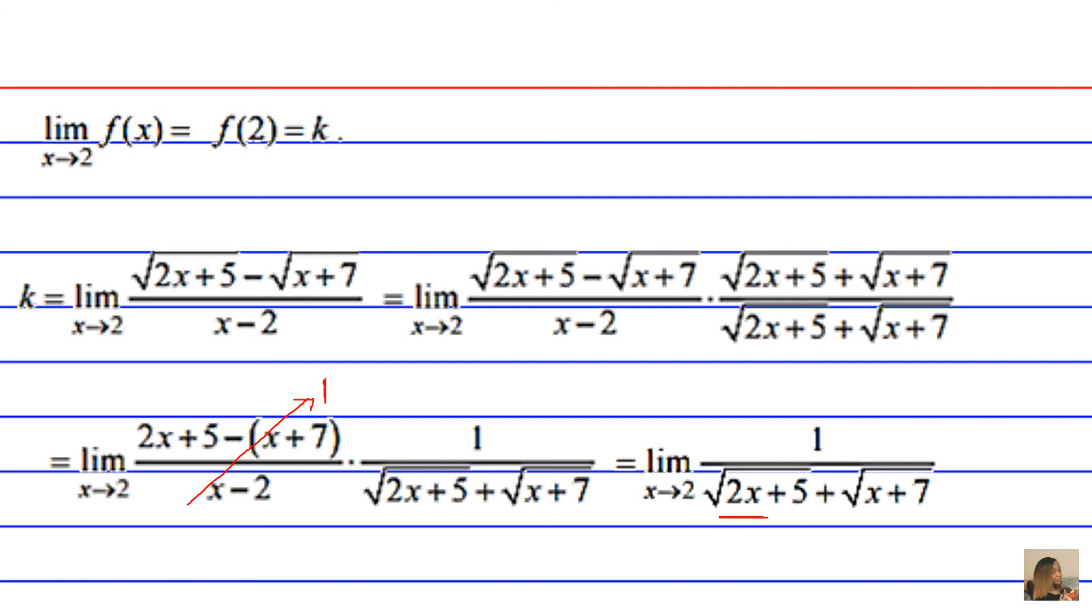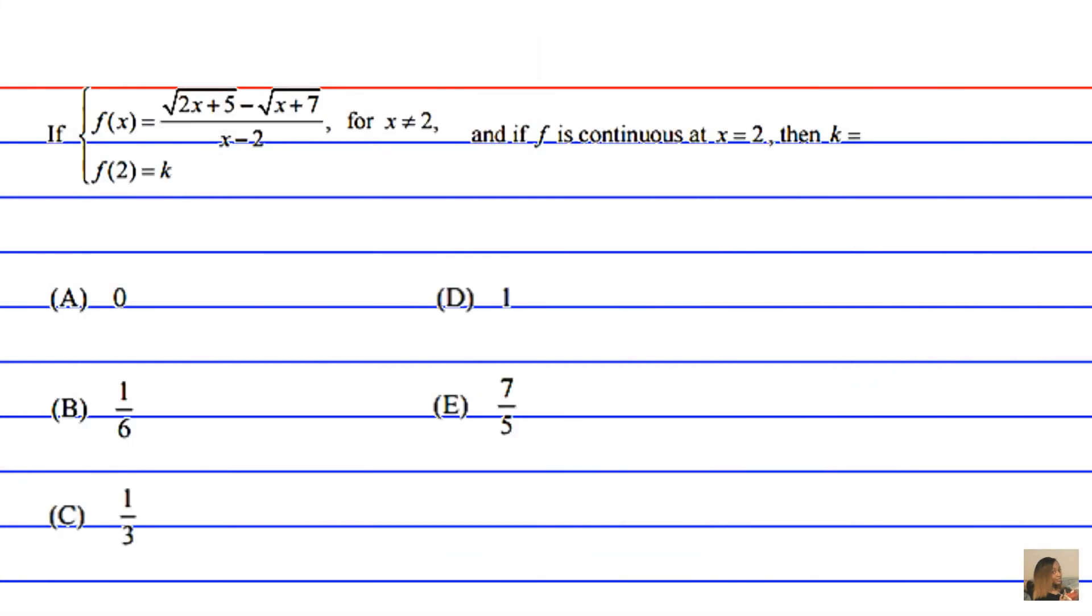And so now we have the limit as x approaches 2 of 1 over the square root of 2x plus 5 plus the square root of x plus 7. And all we're going to do now is just substitute in 2. And we realize that we get 1 over the square root of 9 plus the square root of 9 in the denominator, which is just going to give us 6 because the square root of 9 is 3. So the final answer is 1 over 6.